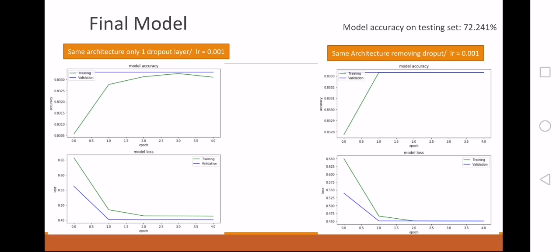We removed the dropout, and you can see our final model. It's the same architecture as the first one, but we removed the dropout layers and increased the learning rate a little bit more. The model accuracy was 72%.